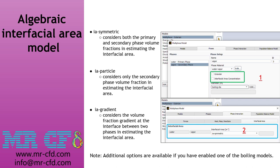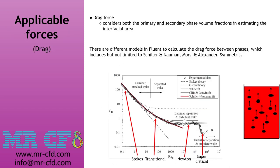Note that additional options are available if you have enabled one of the boiling models. Consider gas bubbles rising through a liquid, such as in a bubble column or glass of soda — the bubbles rise through the liquid, causing a difference in velocities that leads to interfacial drag, which is the transfer of momentum between phases and is a crucial term in modeling two-phase flows.